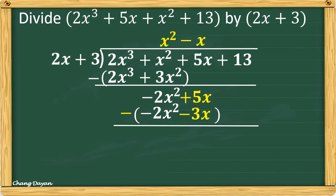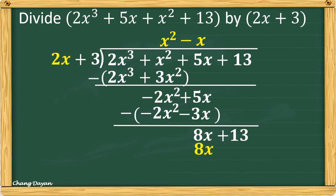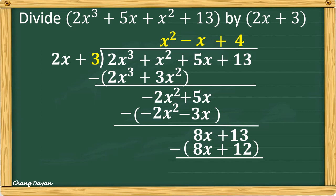We get positive 8x. Then bring down 13. Divide 8x by 2x — same as 8 divided by 2 — we get positive 4. Multiply: 4 times 2x gives 8x, and 4 times 3 gives positive 12. Proceed to subtraction: 8x minus 8x is 0, and 13 minus 12 is positive 1.